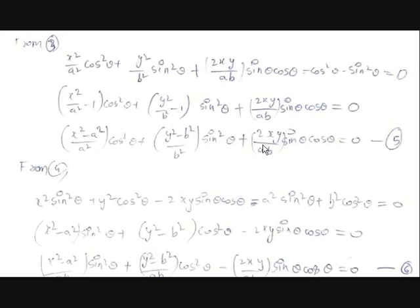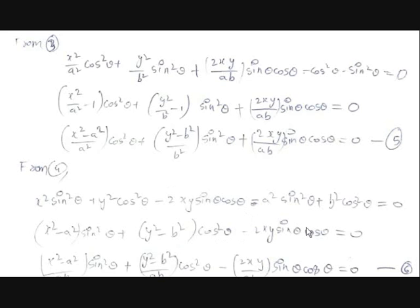Simplifying equation 4: expanding (x·sinθ − y·cosθ)² gives x²sin²θ + y²cos²θ − 2xy·sinθ·cosθ. Moving the remaining terms to the left-hand side and grouping gives (x² − A²)·sin²θ + (y² − B²)·cos²θ − 2xy·sinθ·cosθ = 0. In equation 5 we have +2xy/AB·sinθ·cosθ, but here we only have −2xy·sinθ·cosθ, so we need to introduce the AB factor.